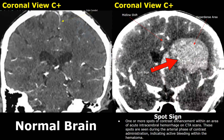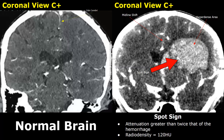These are contrast-enhanced images of the brain in coronal view. A spot sign is seen in hemorrhagic stroke — in a contrast-enhanced image, one or more spots of contrast enhancement are seen within an area of acute intracerebral hemorrhage. The bright spot is seen during the arterial phase of contrast administration and is another indicator of active bleeding within the hematoma. The density of the enhanced spot should be greater than twice that of the hemorrhage, with a radio density of at least 120 Hounsfield units. Midline shift is also present.